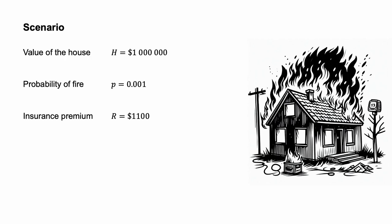The following numerical example is an illustration. An agent is considering insurance against bushfire for a house valued at H equals $1,000,000. The house has a 1 in 1,000, P equals 0.001, chance of burning down. An insurer is willing to offer full coverage for a premium R of $1,100. Note that $1,000 is the actuarially fair price; the additional $100 might represent profit or administrative costs.